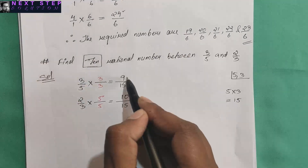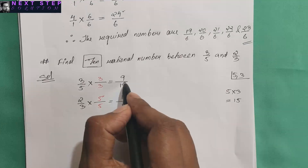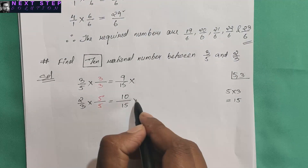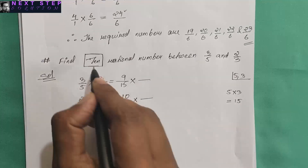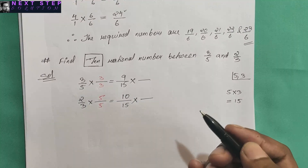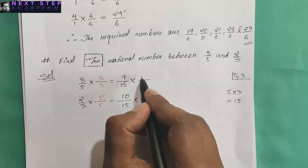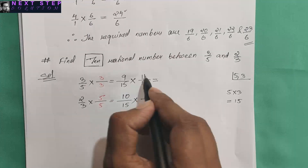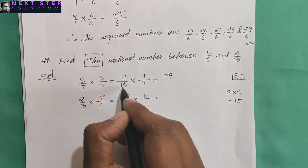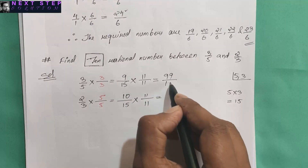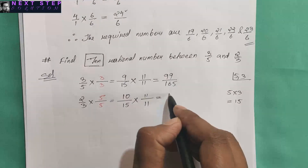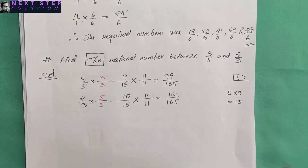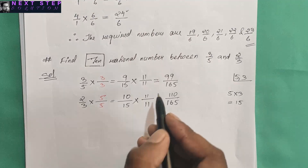Between 9 and 10 we need to find 10 rational numbers, but there aren't 10 integers between 9 and 10. So we follow the same process as before: multiply with a number bigger than 10 — we choose 11. Nine times 11 is 99, fifteen times 11 is 165, ten times 11 is 110, and fifteen times 11 is 165.